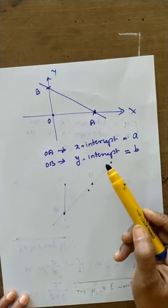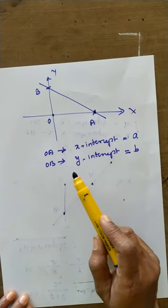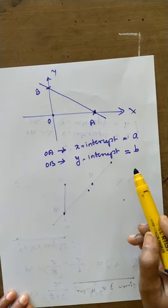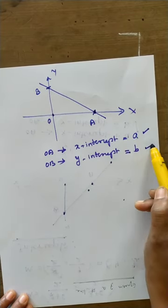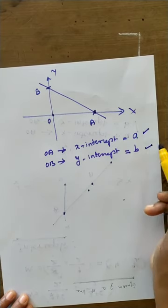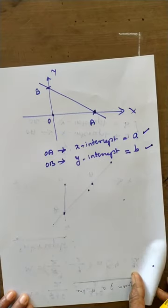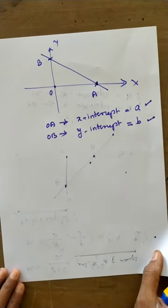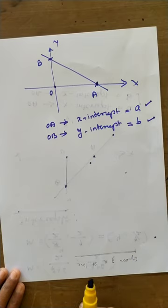There are two types of intercepts: x-intercept and y-intercept. The straight line cuts the x-axis at A and the y-axis at B; OA is the x-intercept and OB is the y-intercept. With this knowledge in place, now we have to study the equation of a straight line.